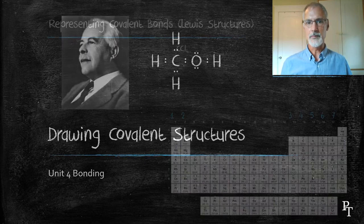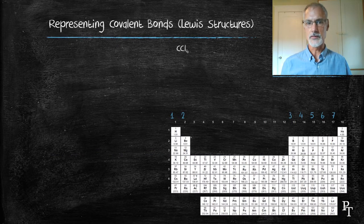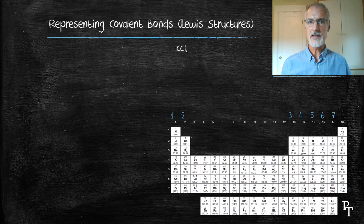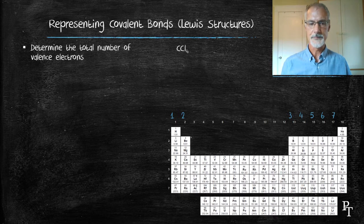First off, I'll start with an example by looking at how to draw carbon tetrachloride. The first thing I need to do is determine the total number of valence electrons that I have available. To do this, I'll consult a periodic table.